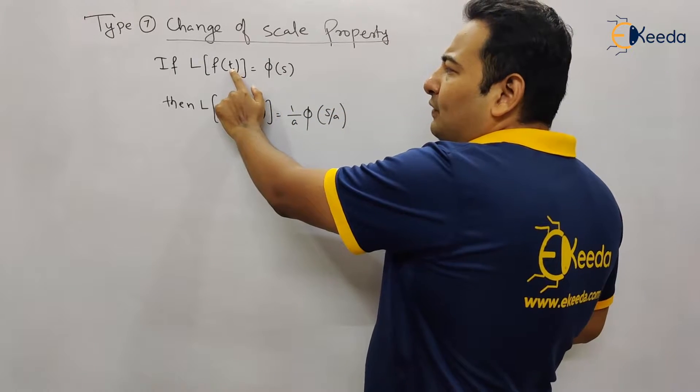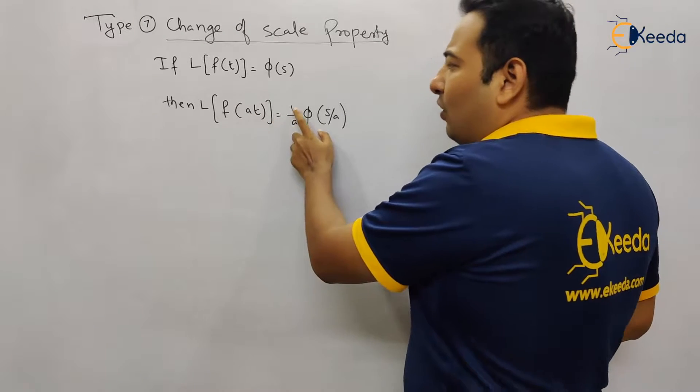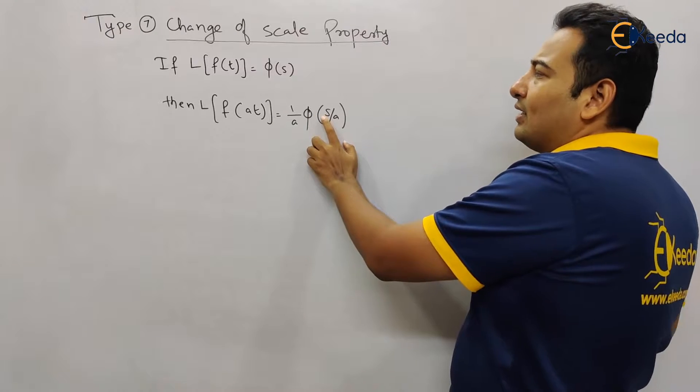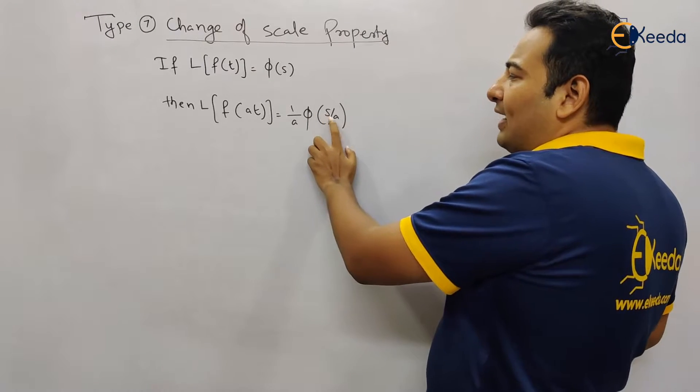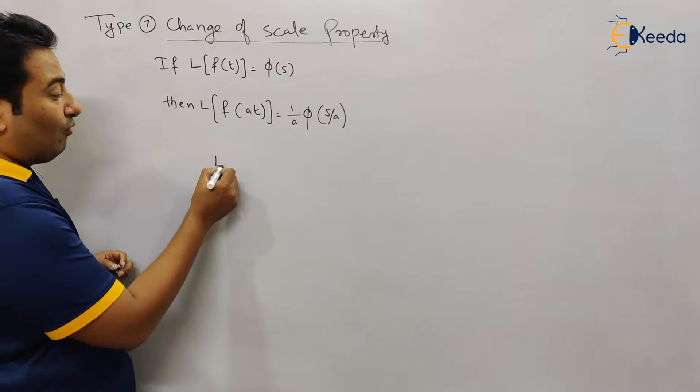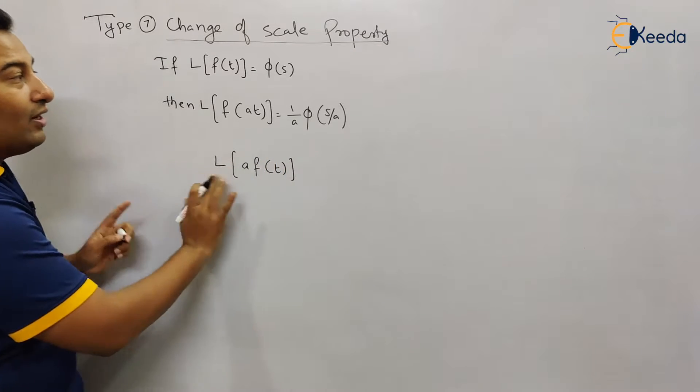It's very simple. See, if this t is multiplied with a, then we write it as 1/a, and s will be replaced by s/a. There is a difference - this is not scaling property.